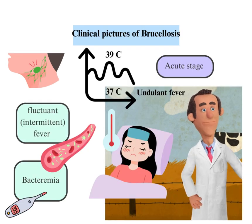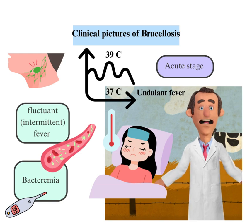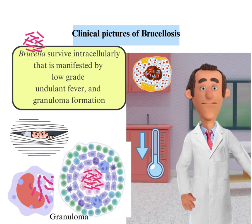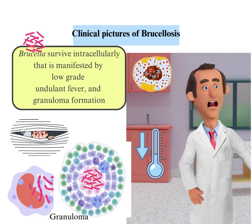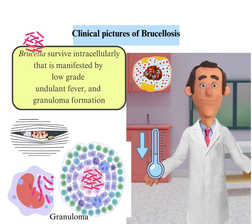In the acute stage, there are fluctuating intermittent fever, enlargement of lymph nodes, splenomegaly, backache, and the patient presents with bacteremia. In the chronic stage, brucella survive intracellularly, manifested by low-grade undulant fever and granuloma formation with intracellular organisms. Agglutinin titers may be high, with recurrent fever and chills due to intermittent release of bacilli from granulomas.